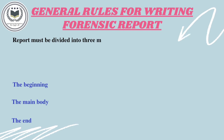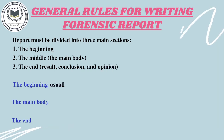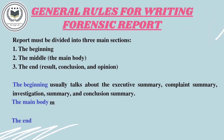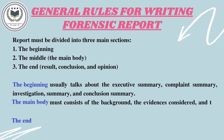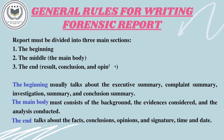There are some general rules which are very important for writing a correct forensic report. The report must be divided into three main sections: the beginning, the middle (also called the main body), and the end. The beginning usually covers the executive summary, complaint summary, investigation summary, and conclusion summary. The main body must consist of the background, the evidence considered, and the analysis conducted. The end covers facts, conclusions, opinions, signature, time, and date.